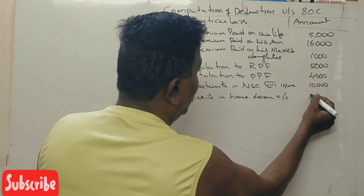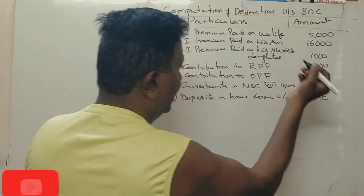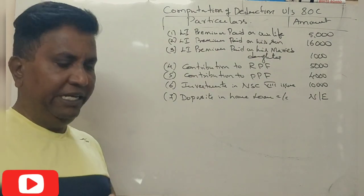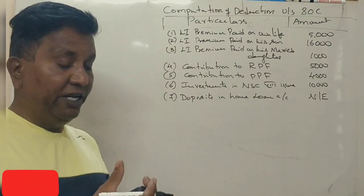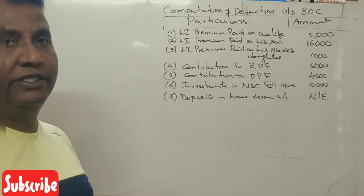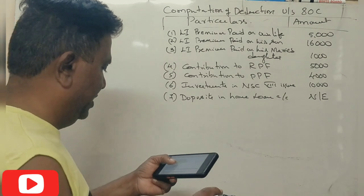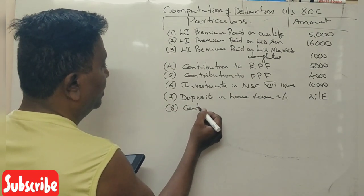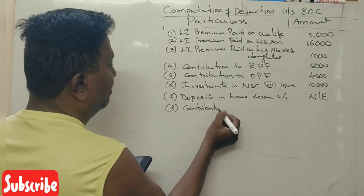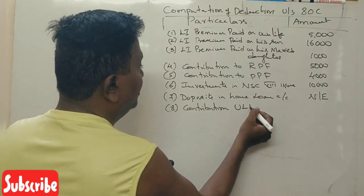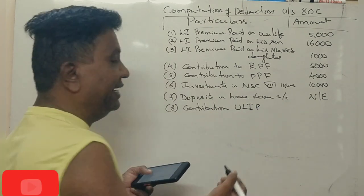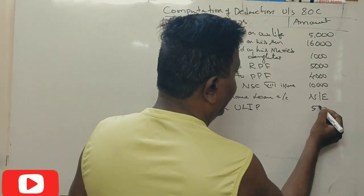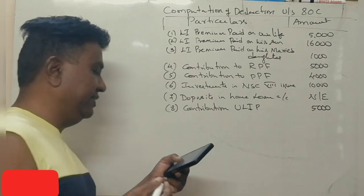It is not eligible. So deposit maadatai, home loan account only deposit maadatai, you repayment maadatai, matra deduction siwutte deposit maadatai. Next, contribution to ULIP. Sir, what is ULIP? Unique linked insurance policy, yen adharu contribute maadatai, adhu kooda deduction ATC nalit siwutte.